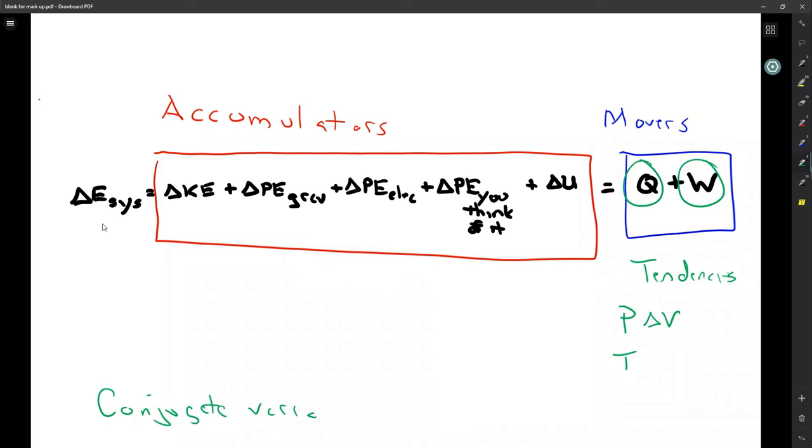The idea there is that you have some type of intensive quantity, like a pressure, and some type of extensive property, like a change in volume. And when you multiply the two together, then you get the joules.